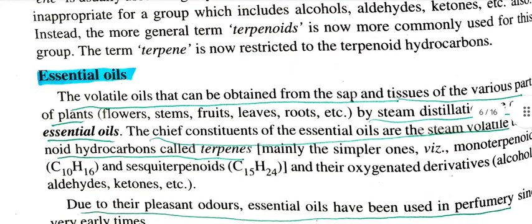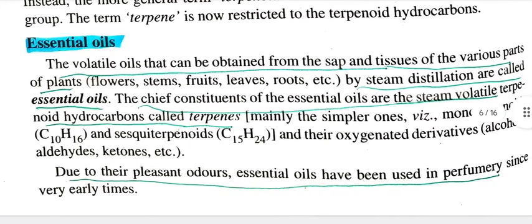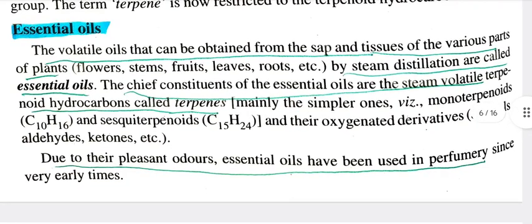The first classification covers essential oils. The volatile oils that can be obtained from the sap and tissues of various parts of plants by steam distillation are called essential oils. The chief constituents of essential oils are volatile terpenoid hydrocarbons called terpenes. Terpenes are the major constituent of essential oils. Due to their pleasant odors, essential oils have been used in perfumery since very early times.